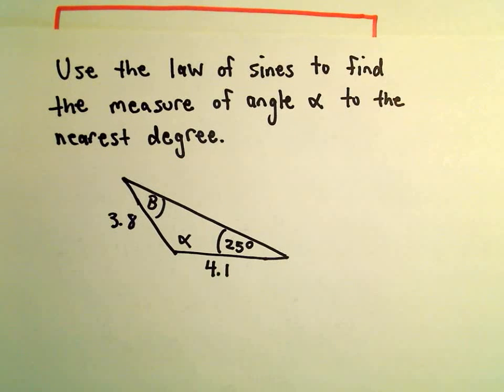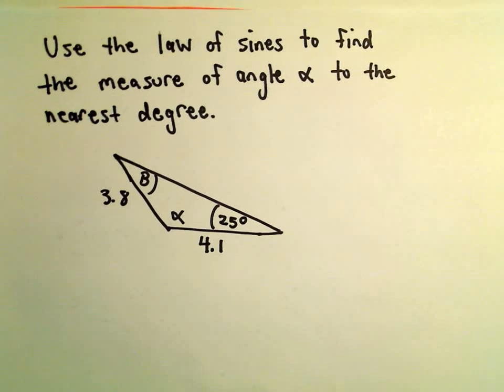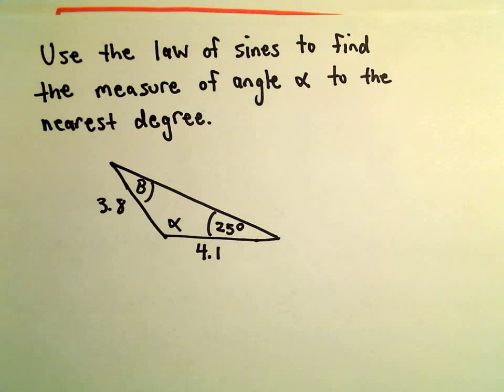Alright, so another example here of finding missing angles. We're going to use the law of sines to find the measure of angle alpha to the nearest degree.